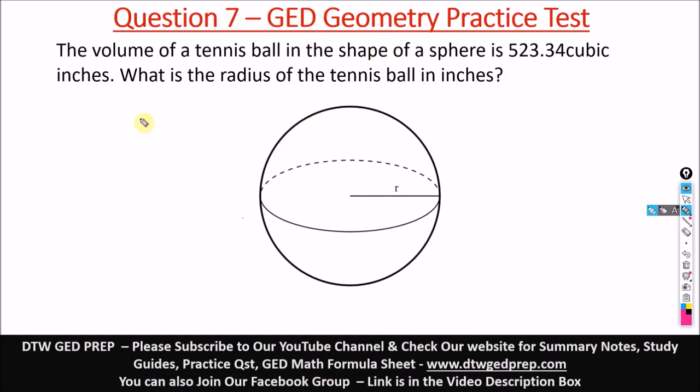Question seven of the GED geometry practice test says the volume of a tennis ball in the shape of a sphere is 523.34 cubic inches. What is the radius of the tennis ball in inches? So we're looking for the radius.